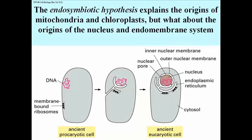The idea is that at some point, an ancient prokaryotic cell might have experienced an invagination — an inward growth of some membrane, including that part of the membrane which would have ribosomes on it. You can see the beginnings in the middle picture of a membrane that might eventually enclose a nucleus and actually contain ribosomes bound to it. Later, an ancient eukaryotic cell would have a primitive nucleus, presumably with nuclear pores, which contains the DNA inside the nucleus and which is intimately associated with endoplasmic reticulum. So we have an idea of how the endomembrane system — the intracellular membranes — might have evolved.